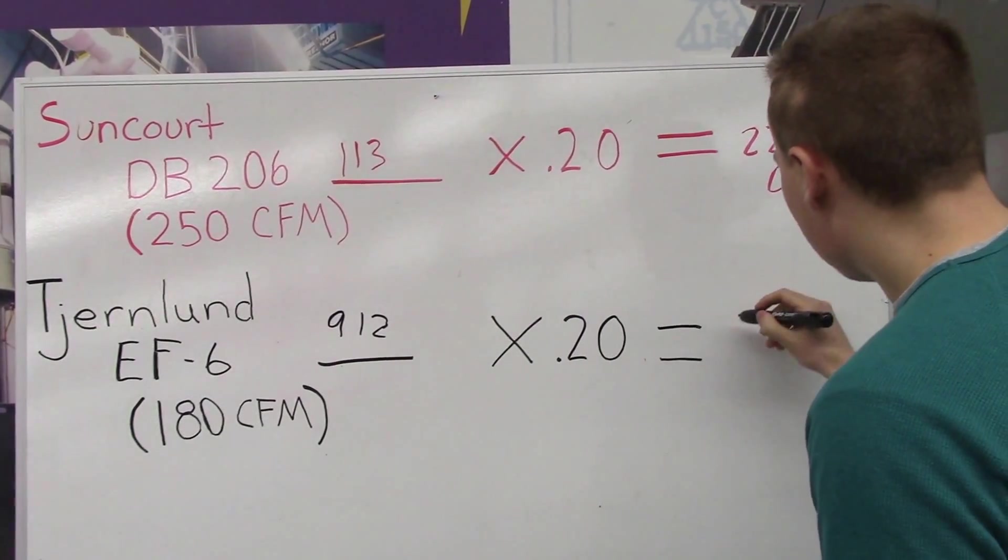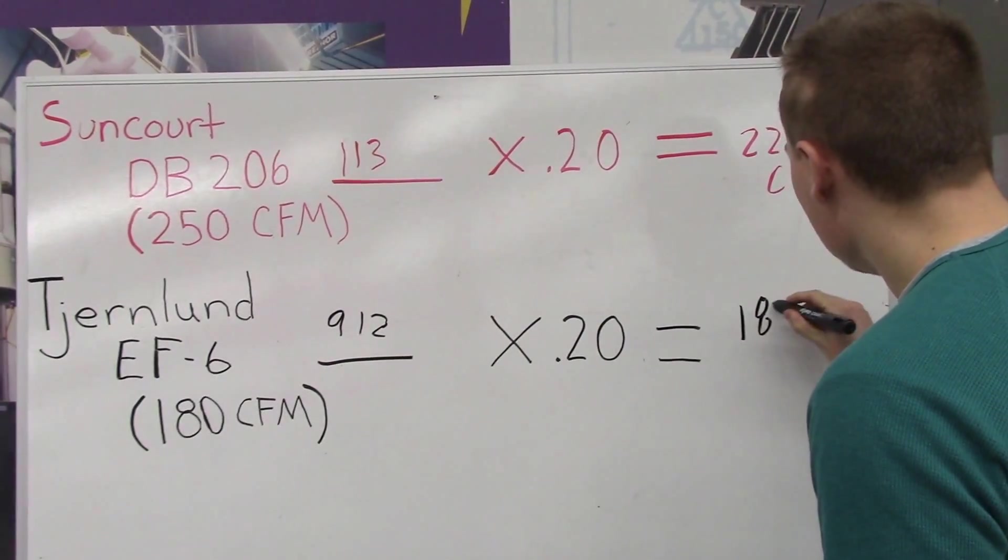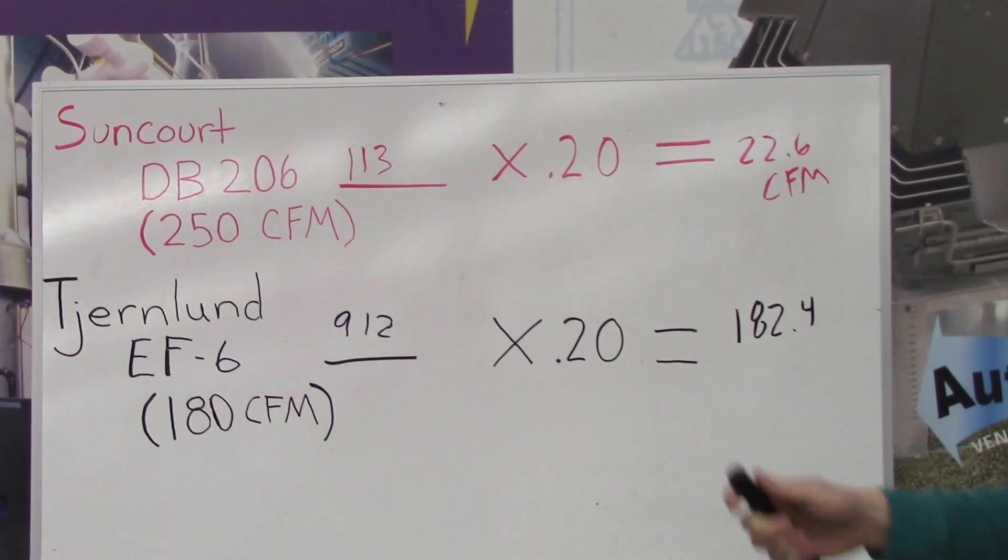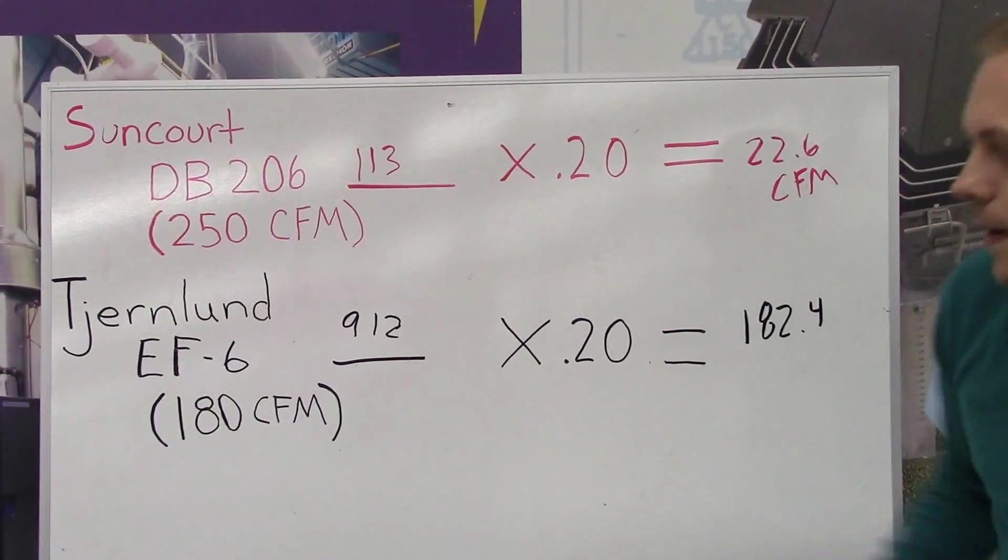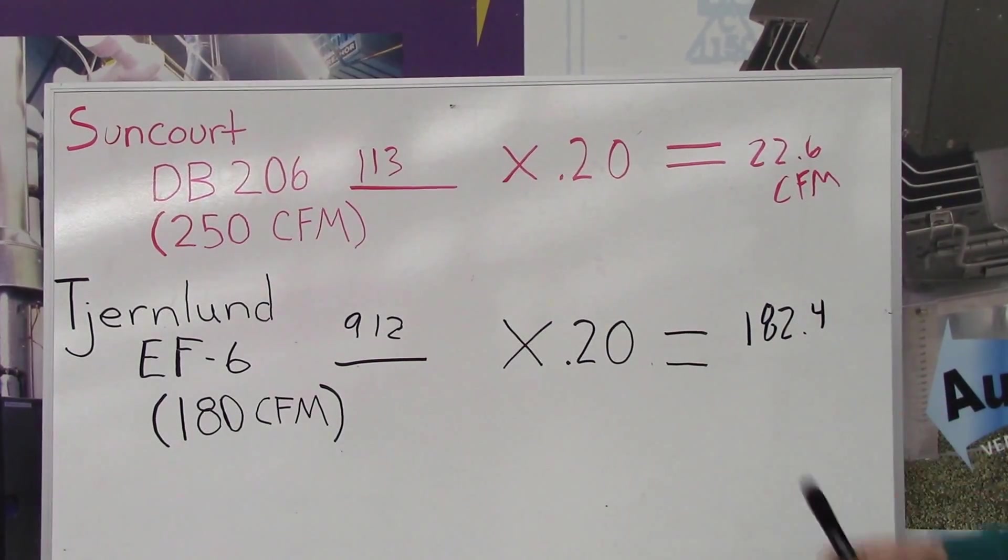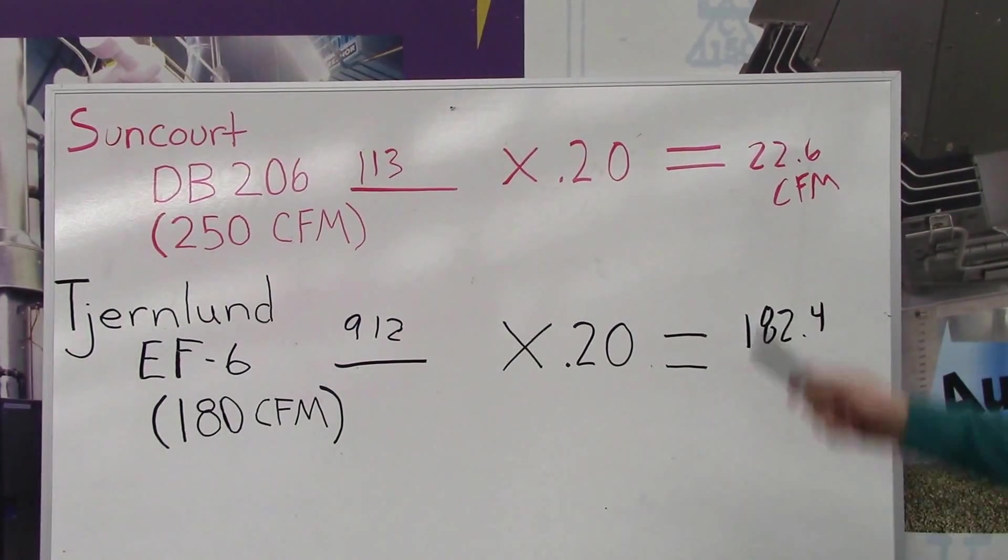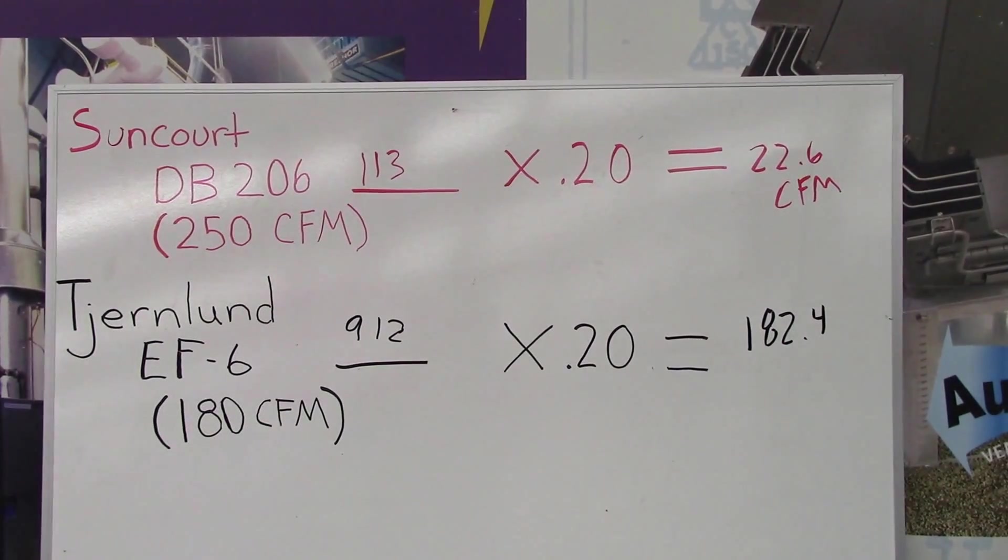So as you can see, the Tjernlund CFM is probably accurate with some resistance of flow, where the Suncourt CFM is greatly exaggerated.